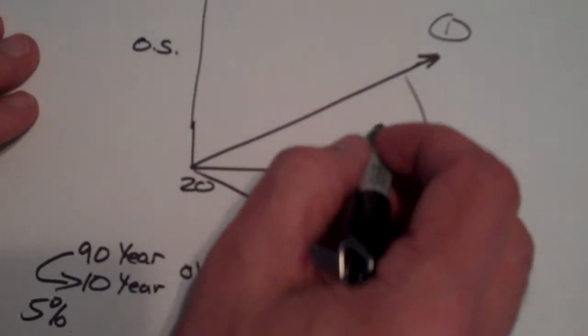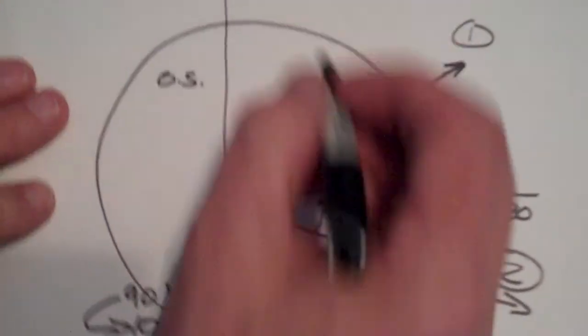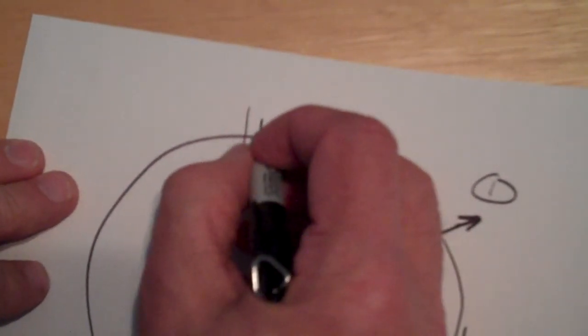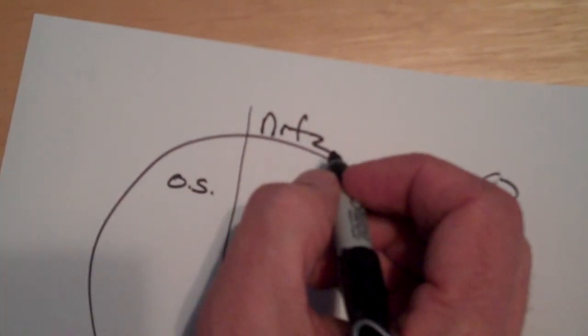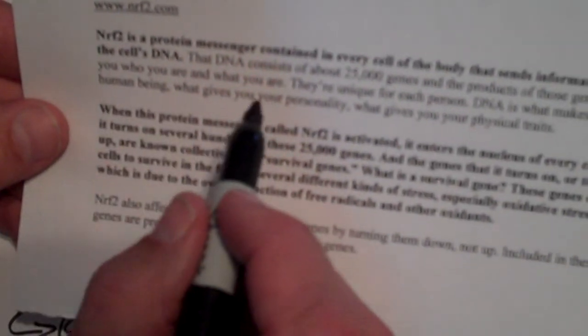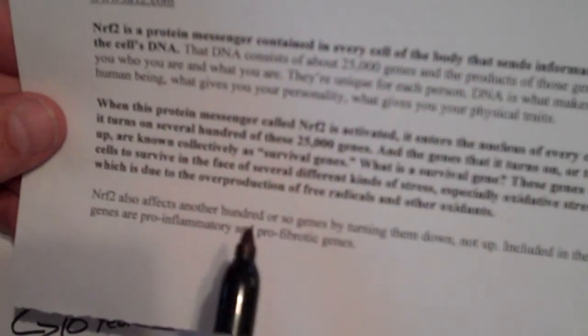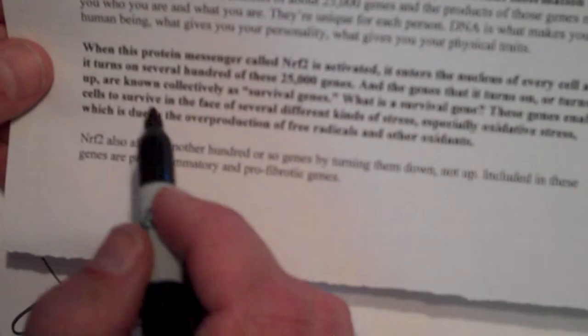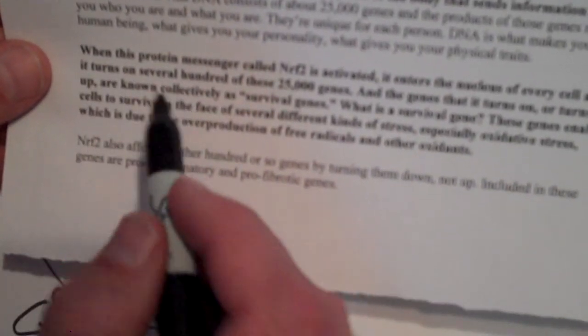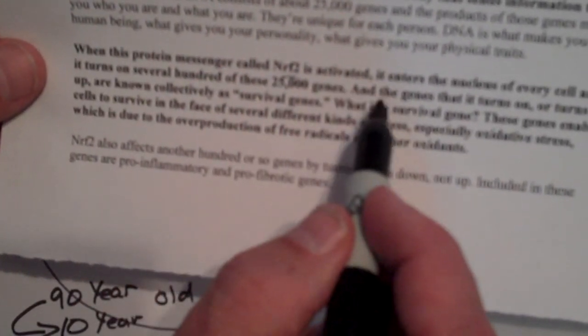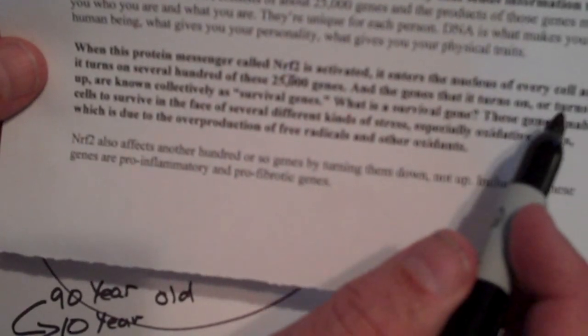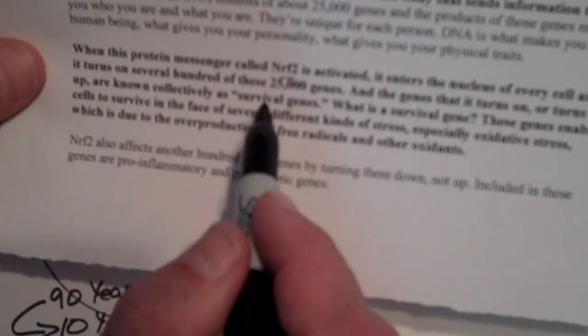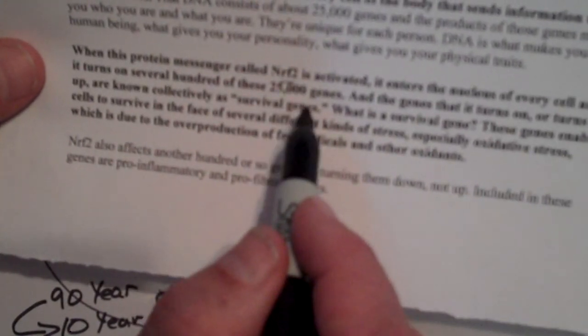The third thing, and I'd just like to wrap a bowl around it, is they now know, and it's called Nrf2. So Nrf2, and this is the definition of Nrf2. Nrf2 is a protein messenger contained in every cell of the body, and it sends information to the cell's DNA. This defines what DNA is. And when this protein messenger called Nrf2 is activated, it enters the cell, enters the nucleus of every cell, and turns on several hundred of these 25,000 survival genes.